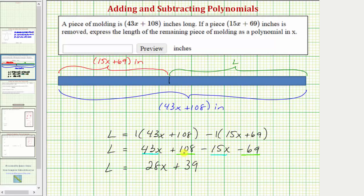And the units are inches. So we'll put this quantity in parentheses and include the units of inches. So the quantity 28x plus 39 inches is the length of the remaining piece.